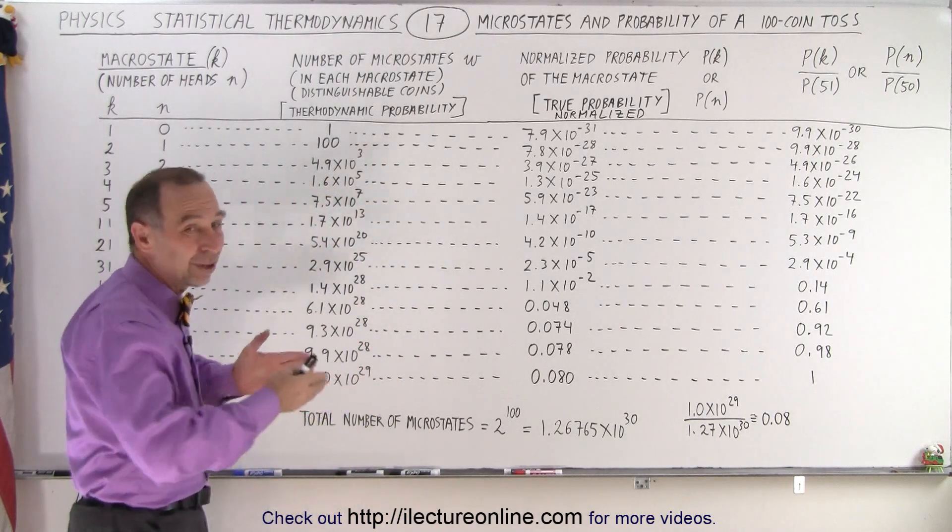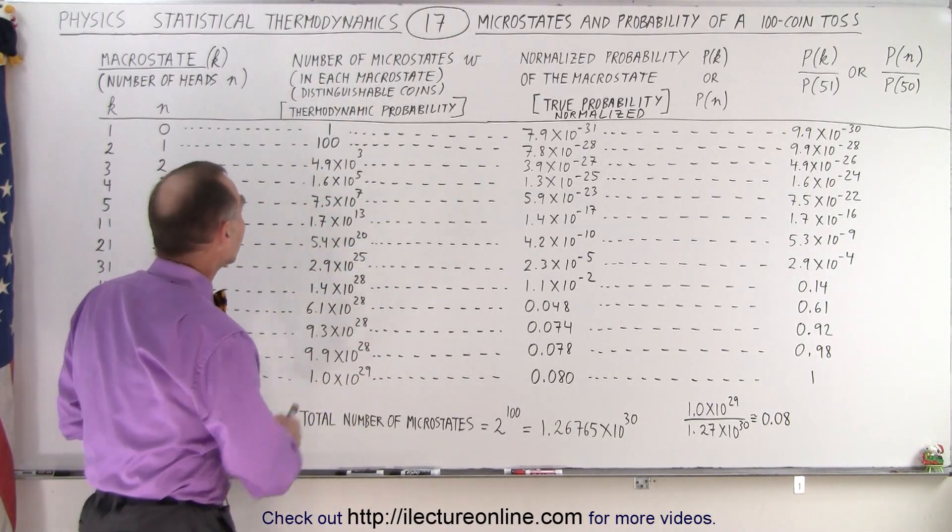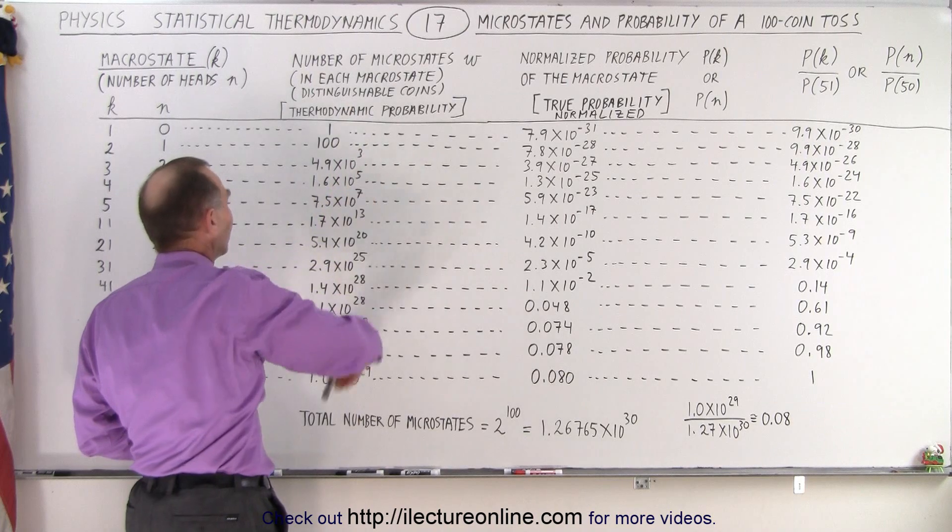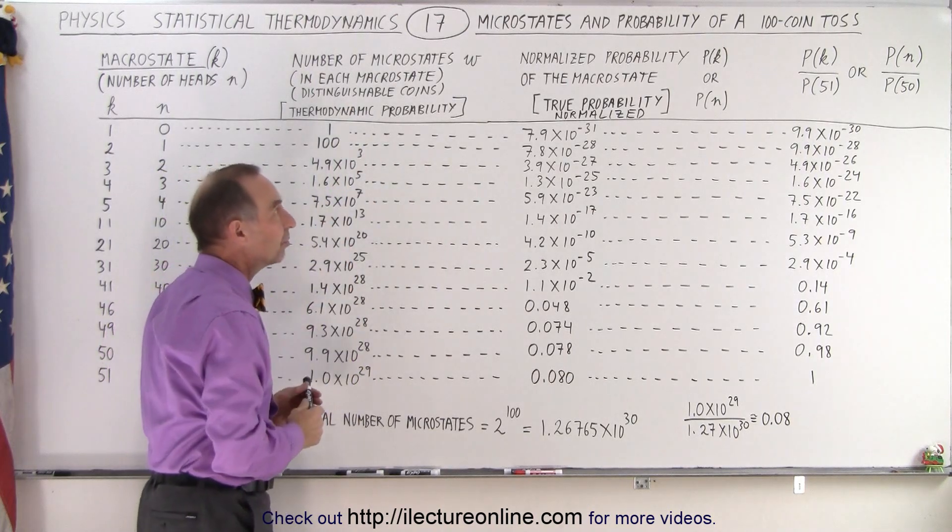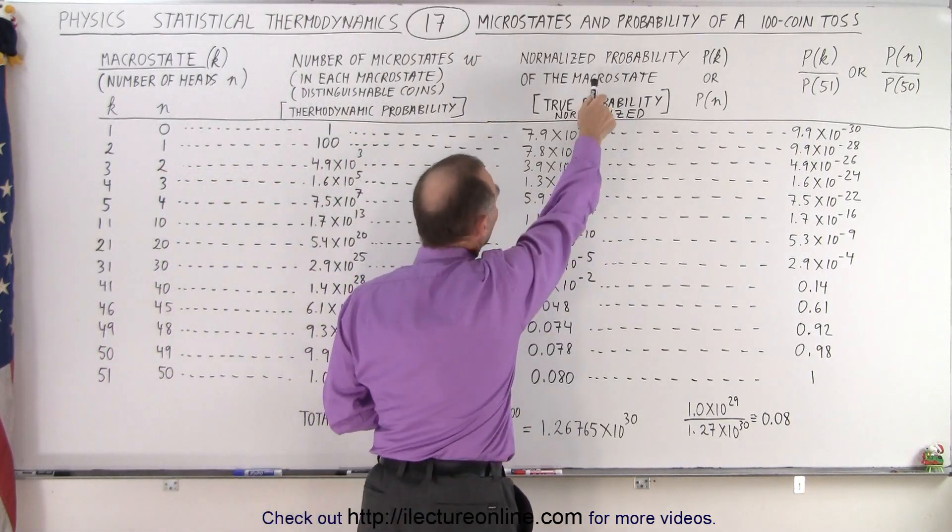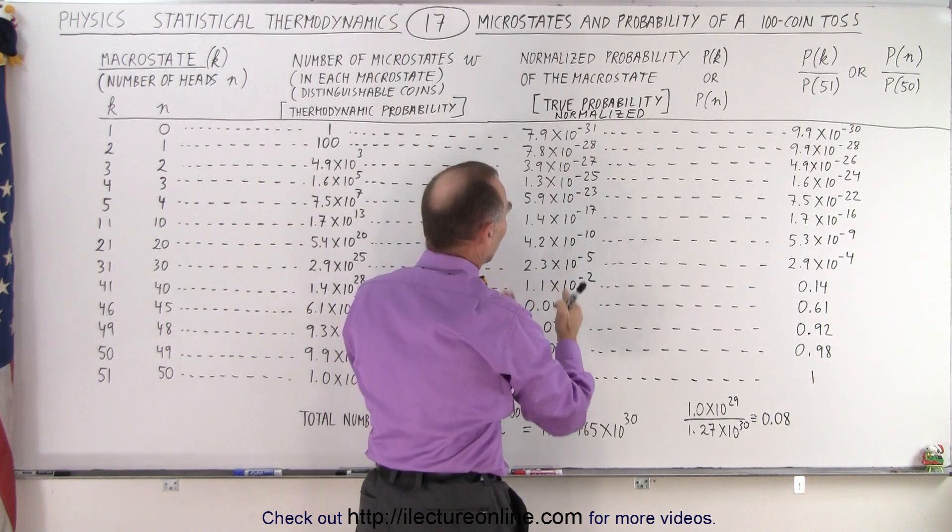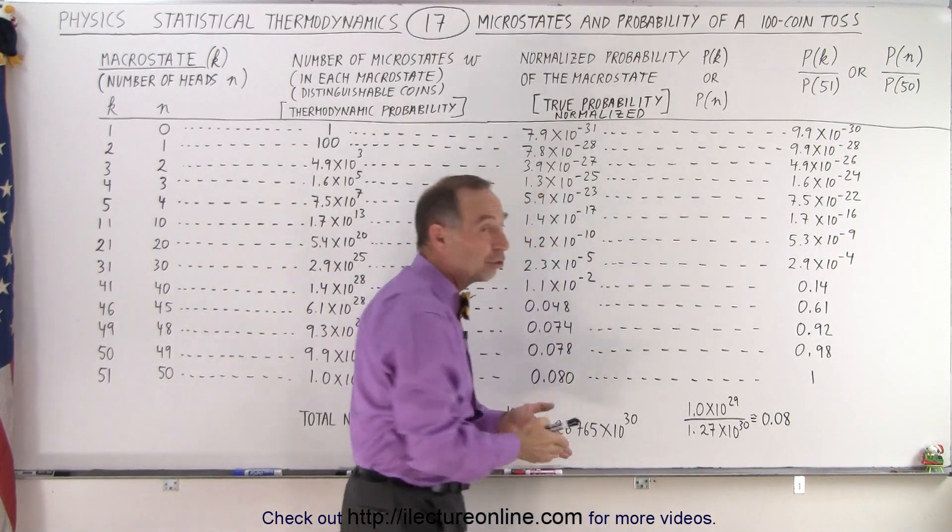So now you can see, there's essentially three types of probabilities. The thermodynamic probability, which is simply the number of microstates. Then there is what we call the normalized probability, where when we add up all the probabilities, they should add up to 1,